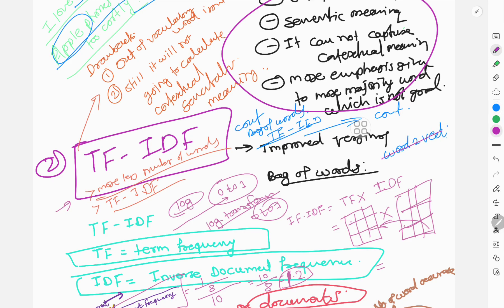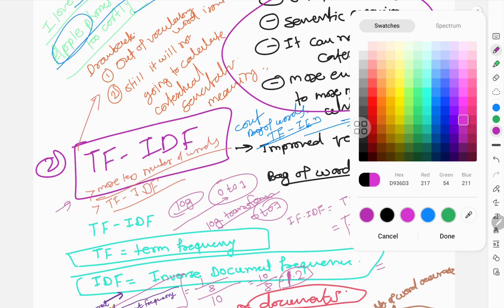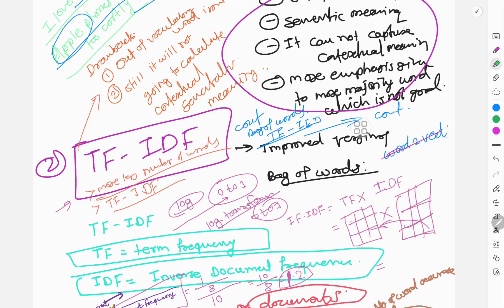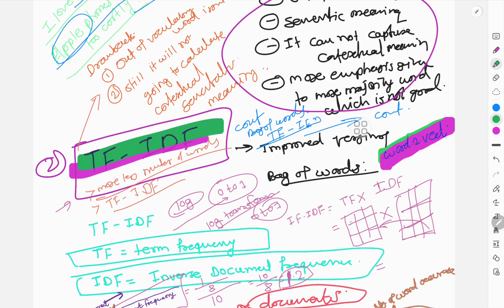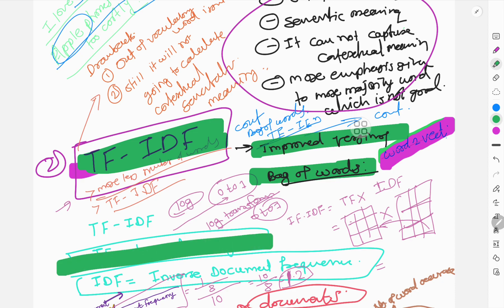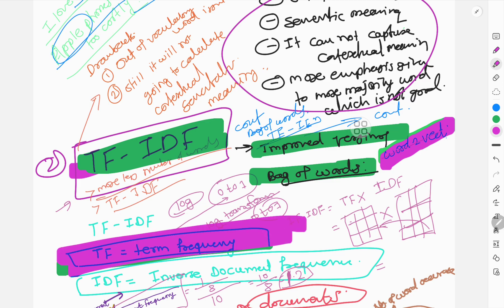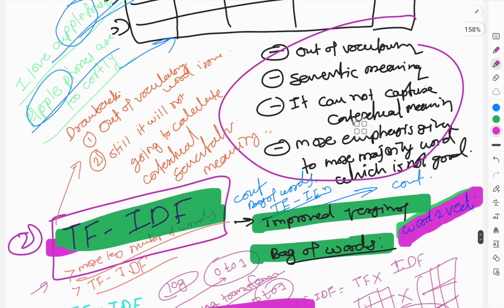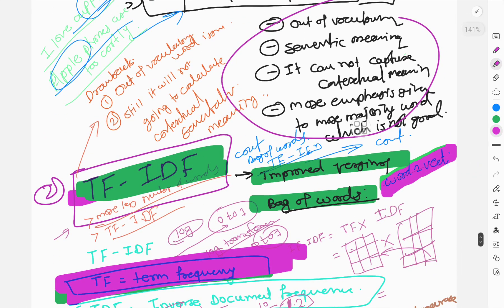Word2Vec is a predictive model based on deep learning. I will cover all those concepts in very simple language in the next lecture. These are the basic building blocks, so please stay on the channel and ask if you have any doubts. Thank you, bye bye, take care.